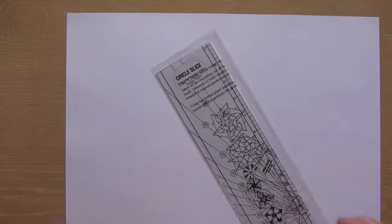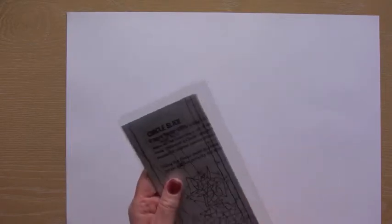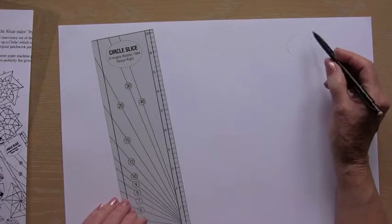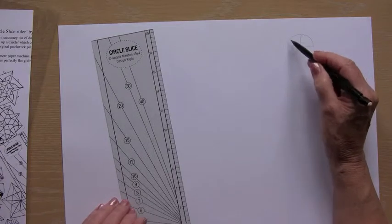This replaces a protractor. The ruler comes with its own instruction sheet. If you wanted to create a circular design that had, let's say, 5 sections,